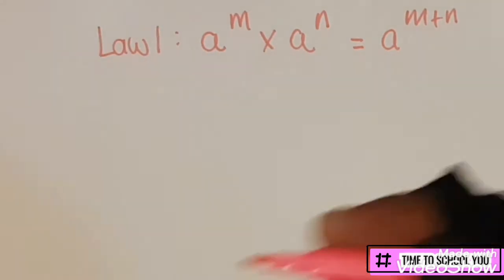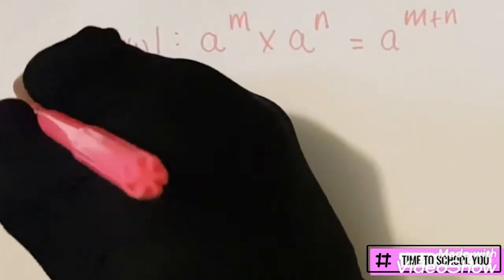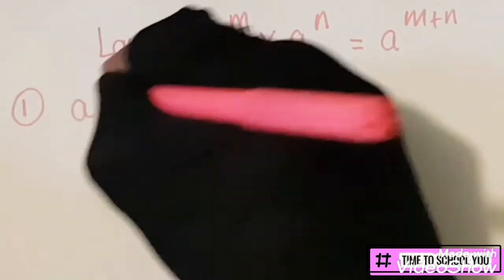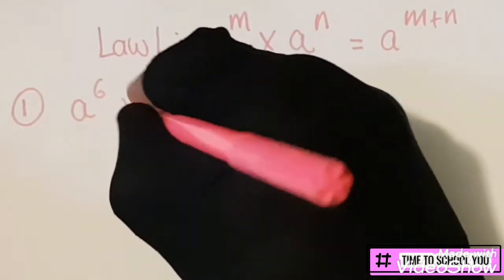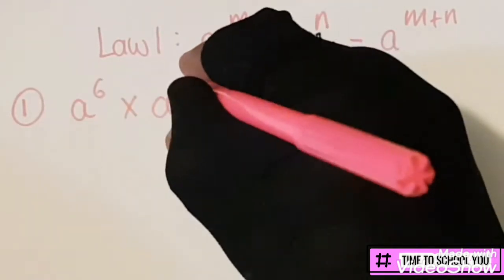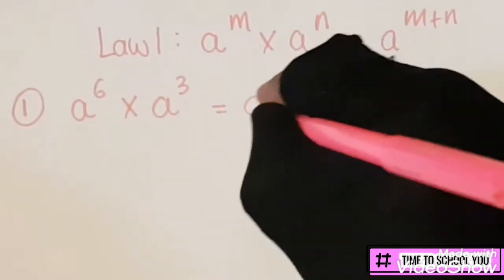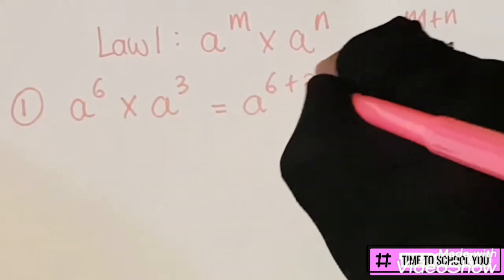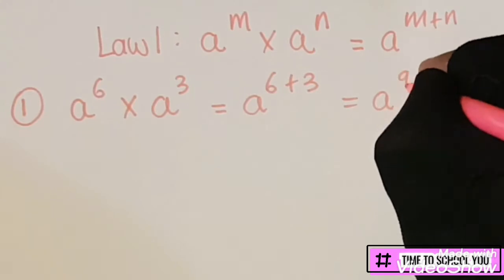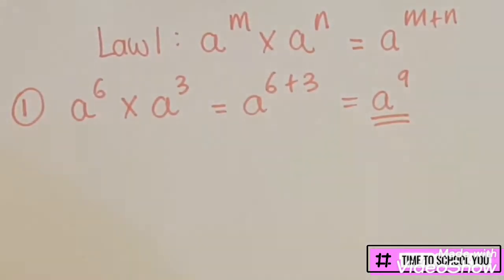Let's look at the first type of example. It would be a^6 times a^3, and this will be a^(6+3), and we get a^9. All right, you don't have to show this working, but just to explain to you how it's done in this video.